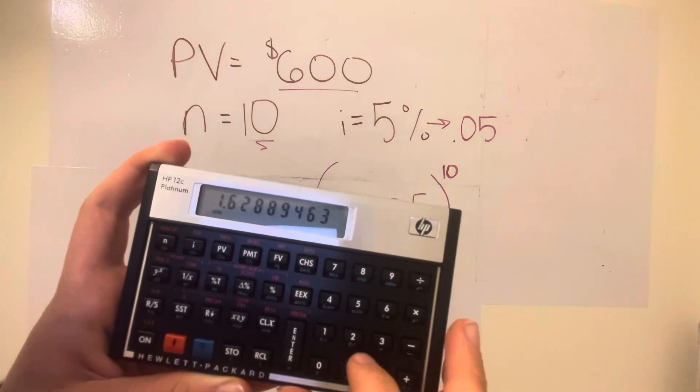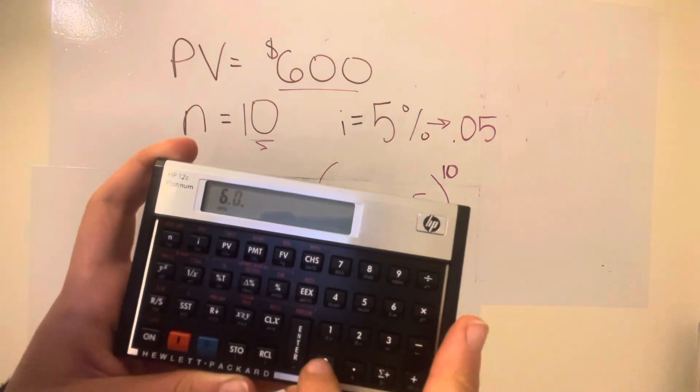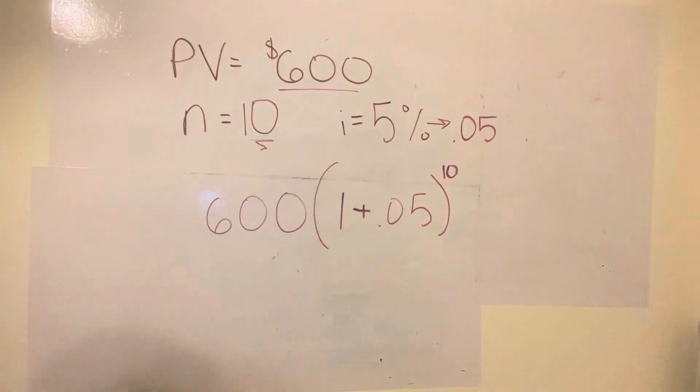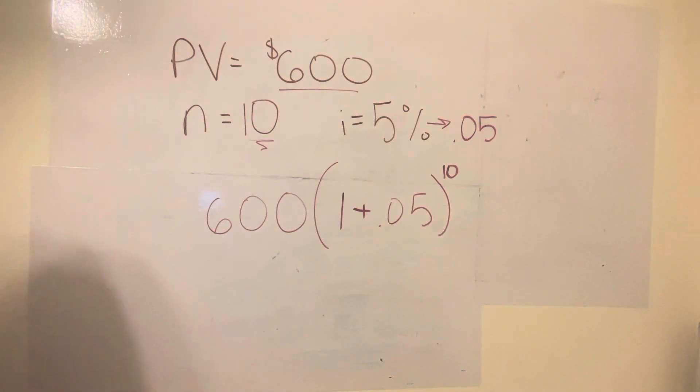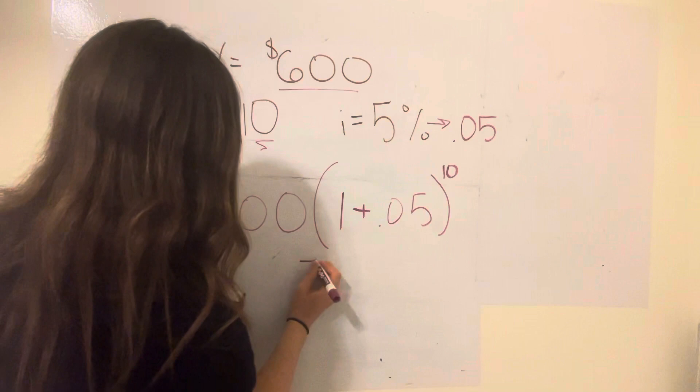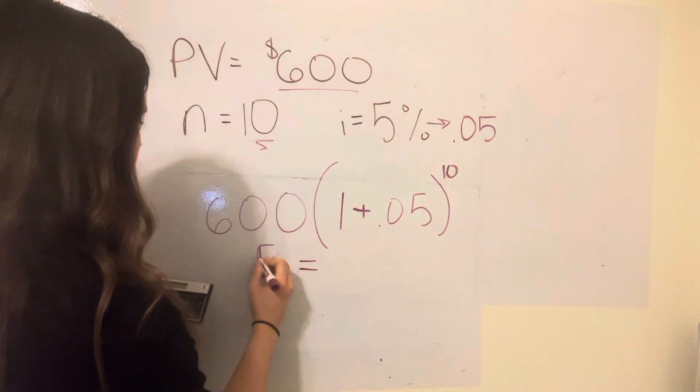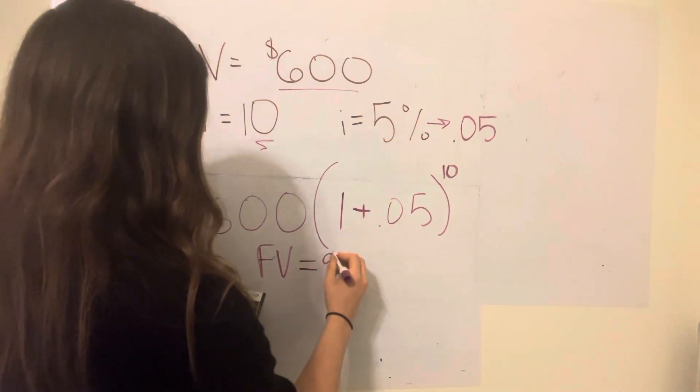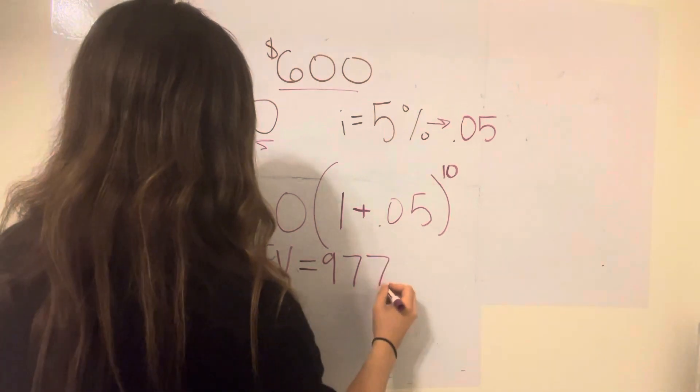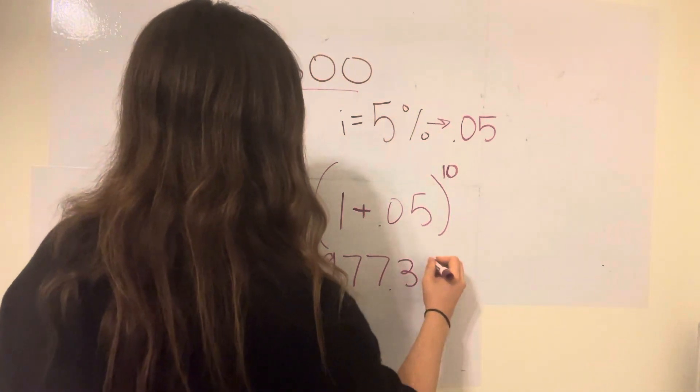There you go, and then we're going to go 600 times. So right now, our future value should equal $977.34.